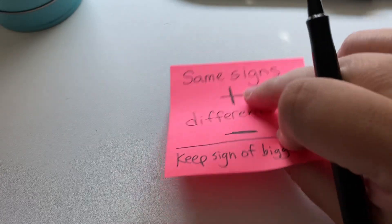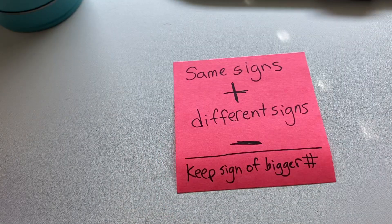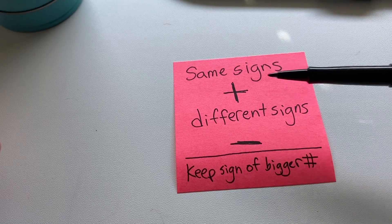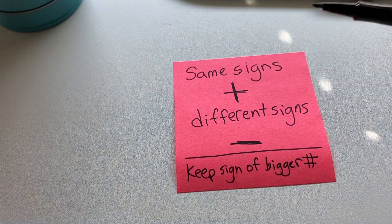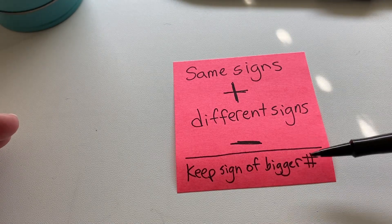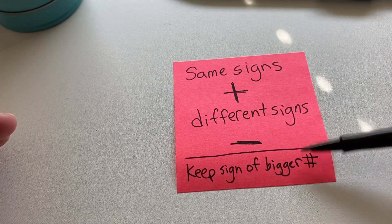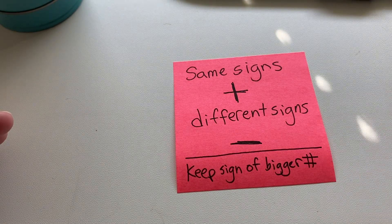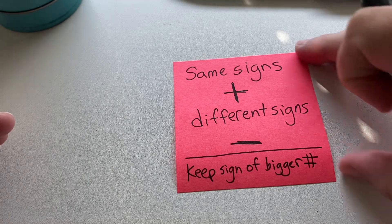So we're going to go back to what do you do with positive and negative integers. As you may recall, if they have the same signs, then we're adding. If they have different signs, subtract and keep the sign of the bigger digit. So you might want to jot that down again if you don't have your notes from that.